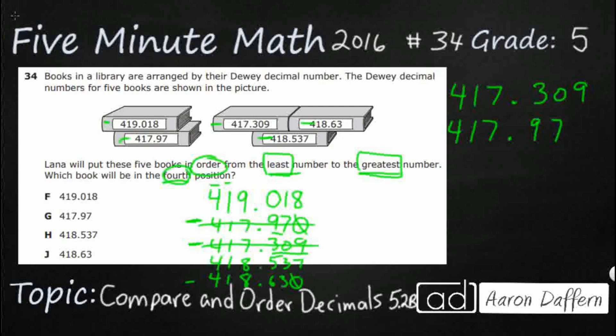I've got two 418s. So let's put those two there. 418, line them up again, obviously. And my 5 is smaller than my 6. So I've got my 537, my 63. Remember, that was an imaginary zero.